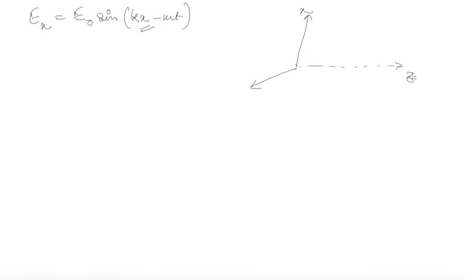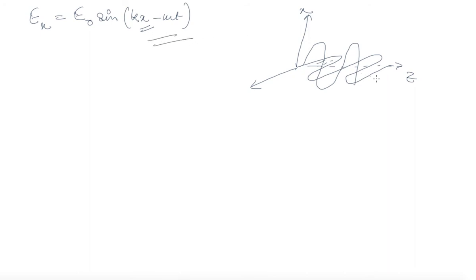The wave is propagating along the x-axis. This is your x-axis, this is your y-axis, and this is your z-axis. The electric field is oscillating perpendicularly, and the magnetic field is oscillating perpendicular to the electric field.